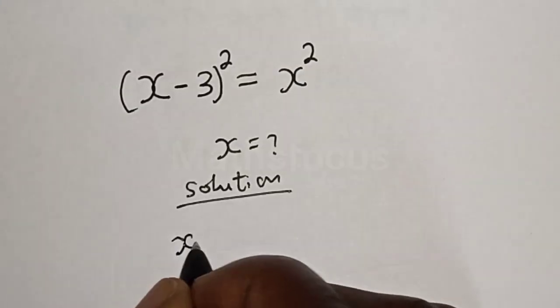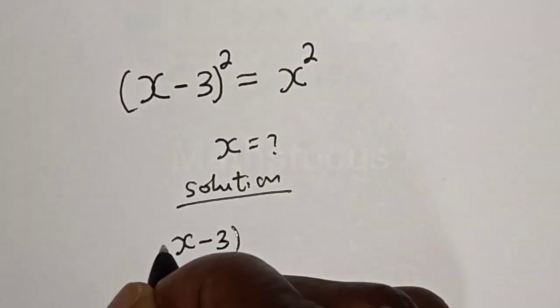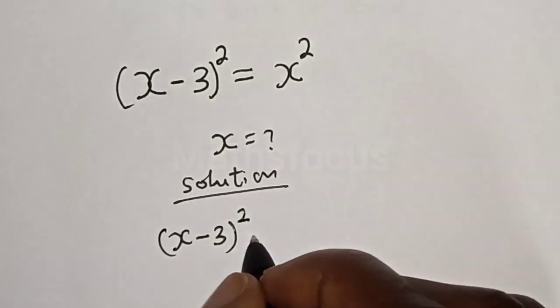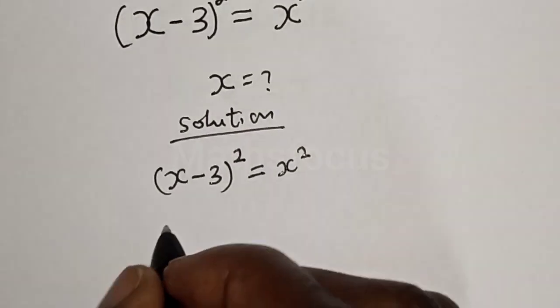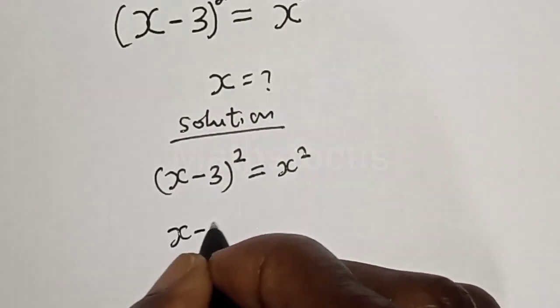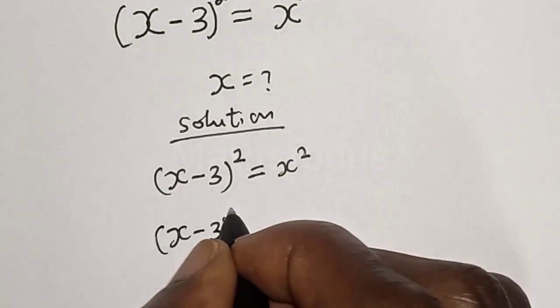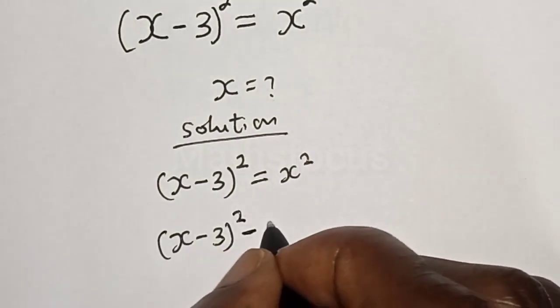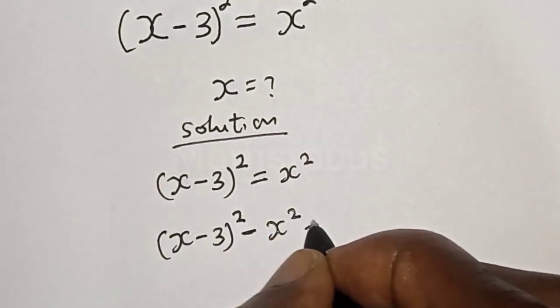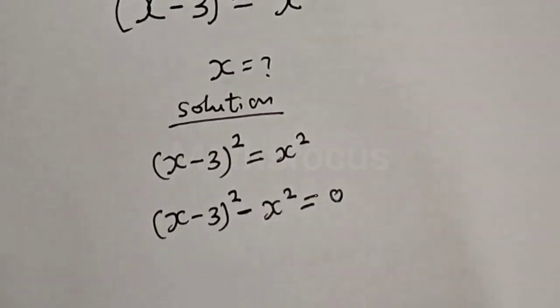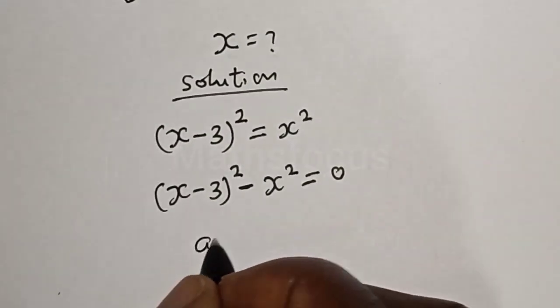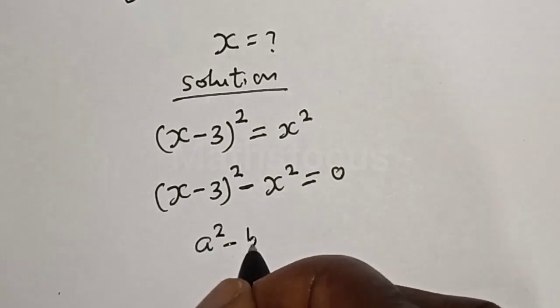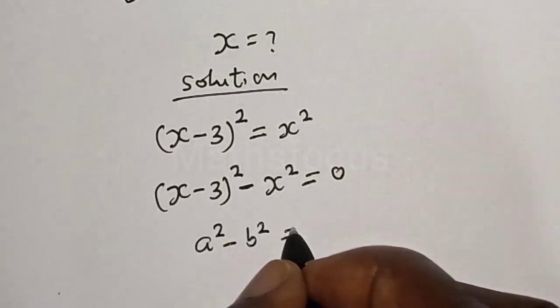We have x minus 3 squared is equal to x squared, and this is x minus 3 squared minus x squared is equal to zero. Now take note of this exponential rule that a squared minus b squared is equal to a plus b multiplied by a minus b.